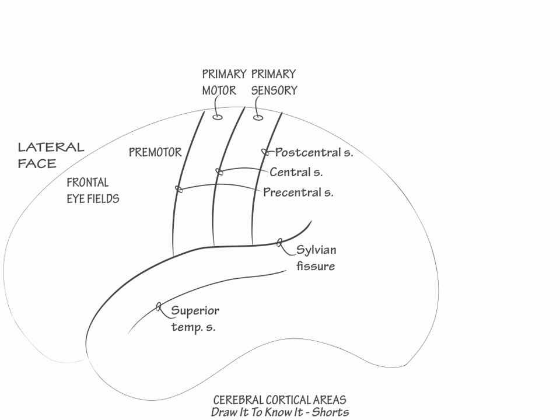Now along the anterior Sylvian fissure, in the inferior frontal gyrus, in the pars opercularis, Brodmann area 44, and pars triangularis, Brodmann area 45, label Broca's area, the speech output area.